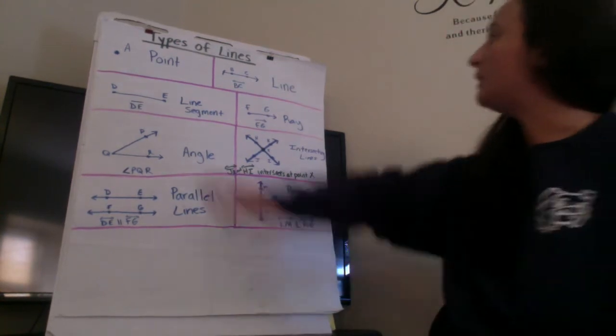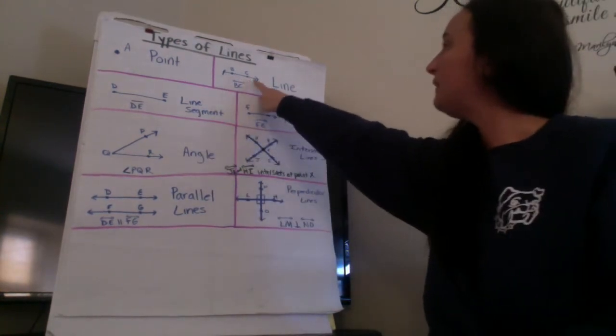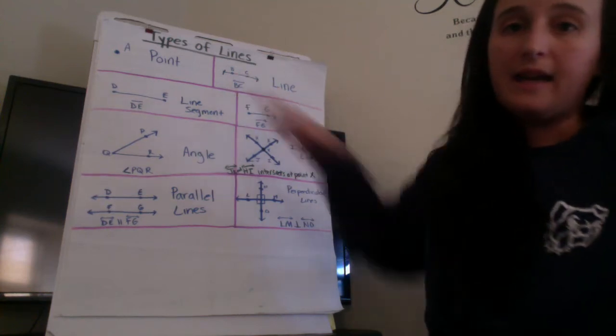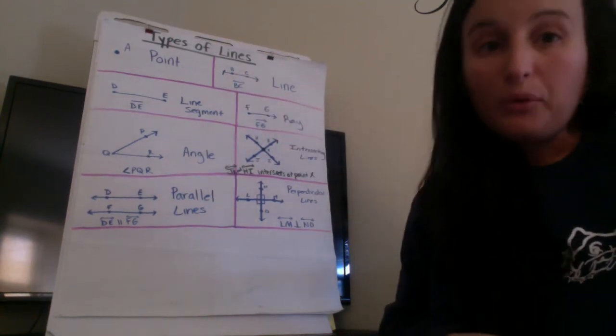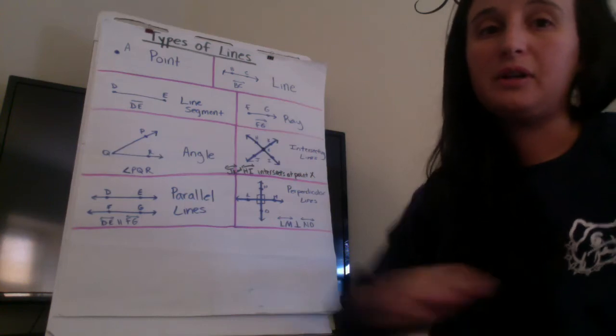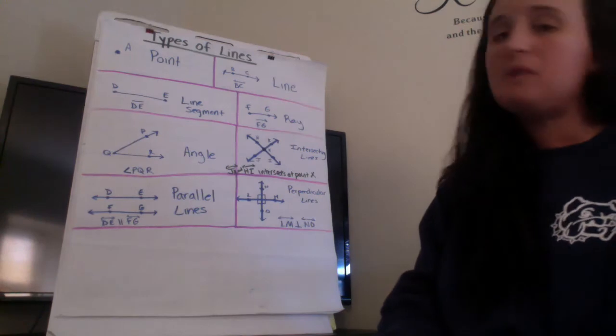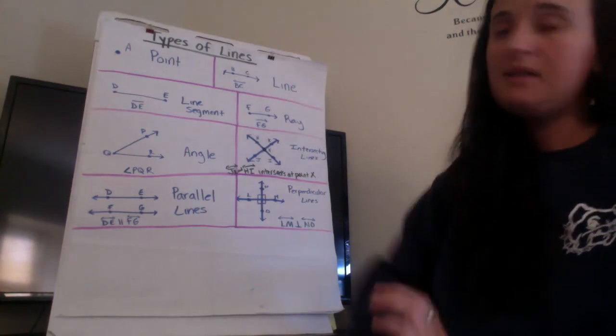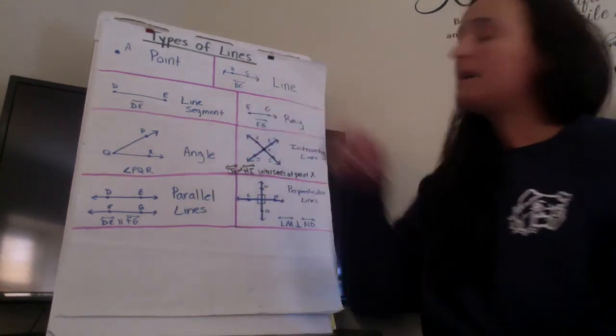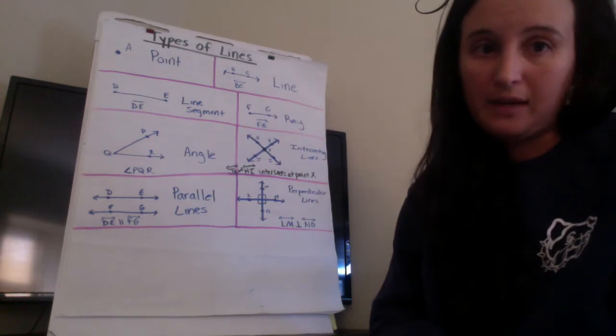We talked about what a line is so here's an example of what a line looks like. Notice that it has arrows on both ends of the line it goes on and on forever on both sides and if I were to name this line I would call it line BC. You'll notice the points kind of help you with naming it.